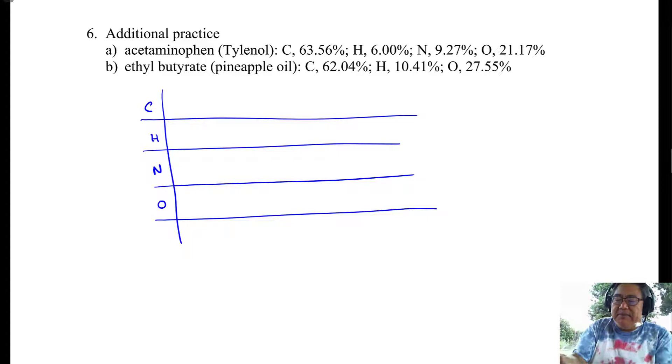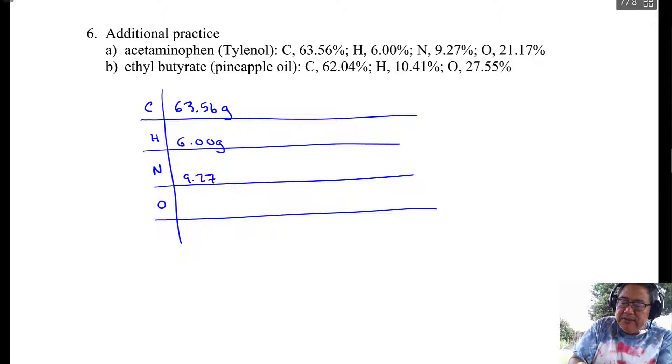So when you have percentages, you assume a 100-gram sample. So then you're going to have 63.56 grams of carbon, and then you're going to have 6 grams of hydrogen, and 9.27 grams of nitrogen, and then 21.17 grams of oxygen. Now, for each one of these, you'll be converting it over to its number of moles.